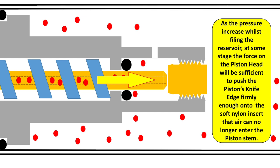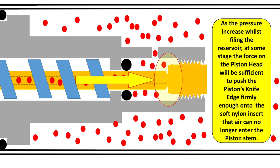Now that you know what these two components look like, let's get back to the schematic. As the pressure increases while you're now filling your reservoir, at some stage the force on the piston head will be sufficient to push this piston's knife edge firmly enough onto this little nylon insert that the air can no longer enter into the piston stem. In other words, it's blocked itself.